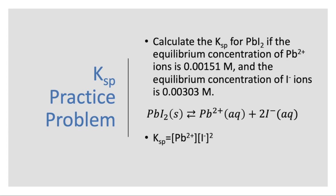And my expression for the KSP is just the concentration of lead ions times the concentration of iodide ions squared. Because the PbI2 is solid, it doesn't show up in our KSP expression.